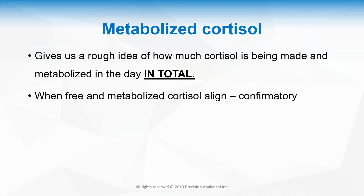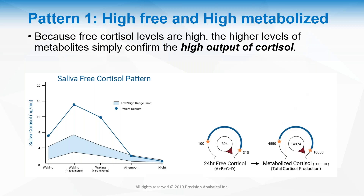I'm going to give you four patterns as they relate to the Dutch Test. Pattern one is high free cortisol and high metabolized cortisol. Both dials being high confirms they have high cortisol output — they are making a lot of cortisol, clearing a lot, and have a lot of free cortisol floating around. This person's HPA axis is fired up for whatever reason.